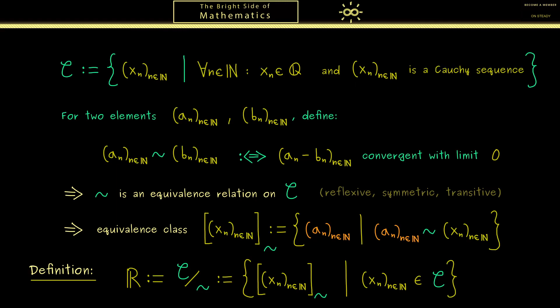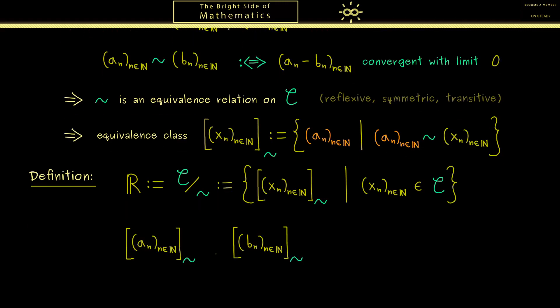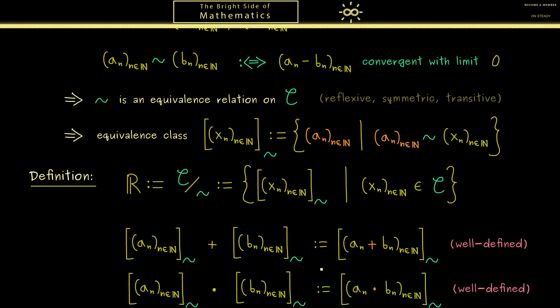Now the only things that are still missing are the two operations, addition and multiplication, and the ordering. Therefore, for the first part, let's define how we can add two equivalence classes here. Indeed, that's not hard at all. We can just use the addition we have for the rational numbers for all the members of the two sequences. Of course, as always, then we need to check that this definition does not depend on the chosen representation of the two equivalence classes. In this case, you just have to calculate a little bit with the sequences, and then we get out yes, it's well-defined. And afterwards, you will believe me that everything works the same when we define the multiplication. We just use again the well-known multiplication for rational numbers.